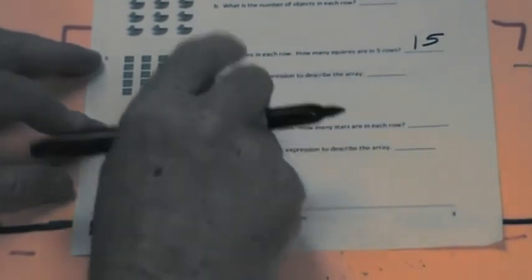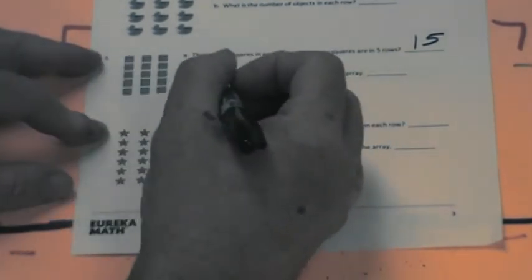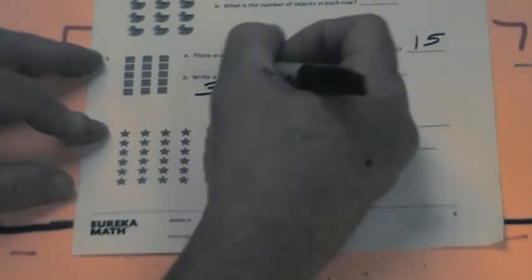Three, six, nine, twelve, fifteen. Write a multiplication expression to describe this array. Well, you can say three times what? This way, five equals fifteen.